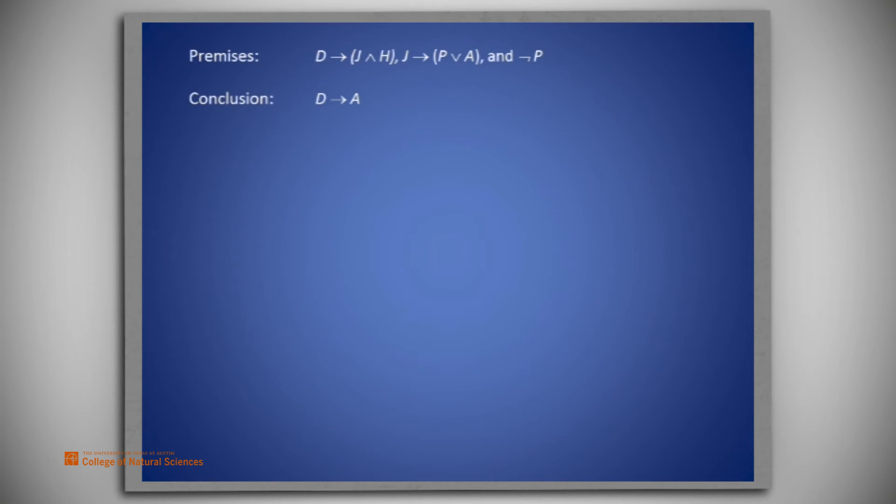Since D was added as a conditional premise, we don't have the conclusion A from the original premises. What we have from the original premises is that D implies A. So it seems a good place to begin this proof is with a conditional premise of D.